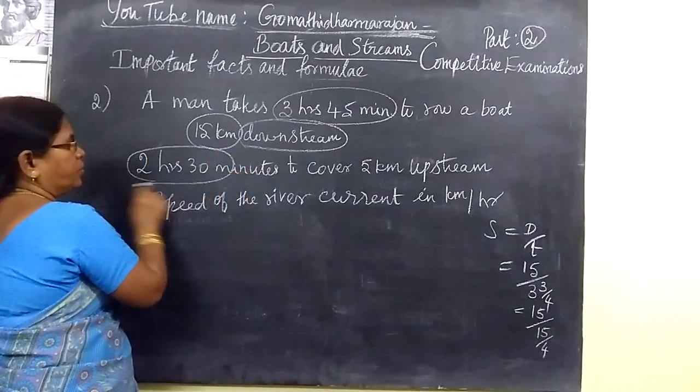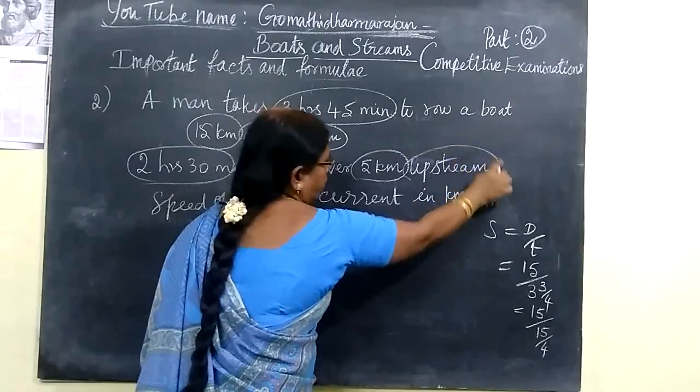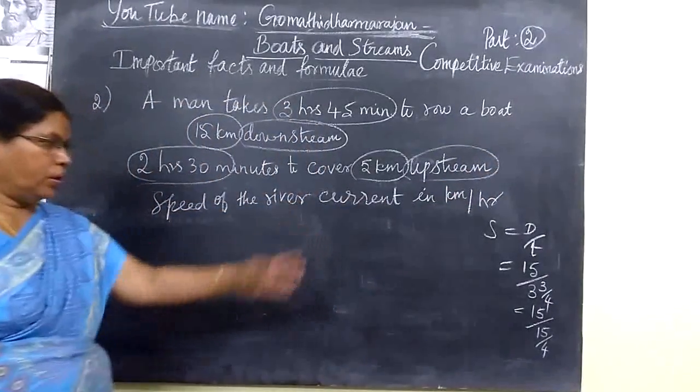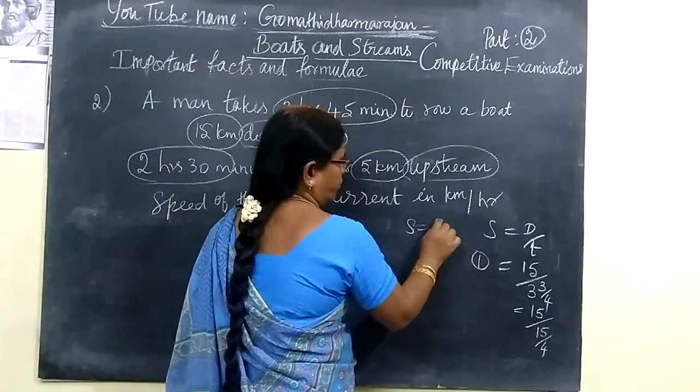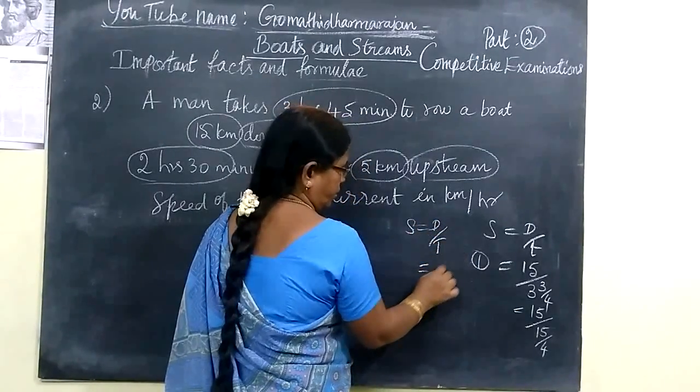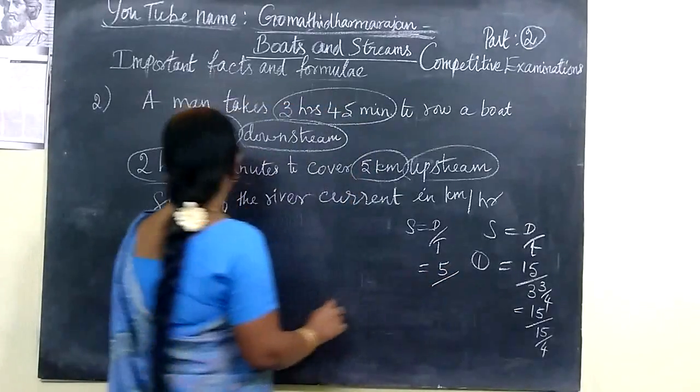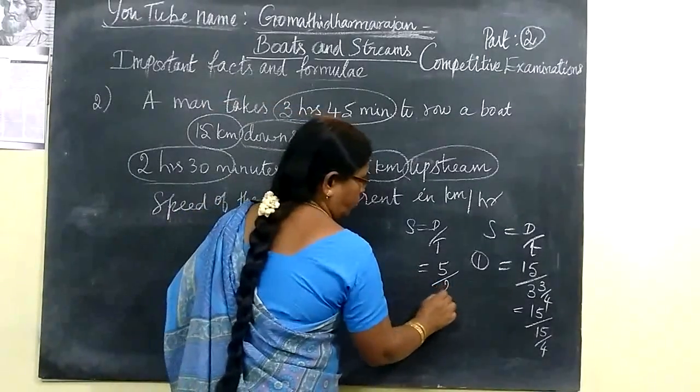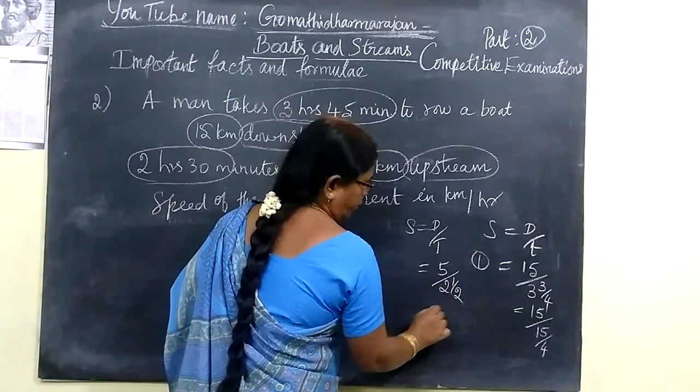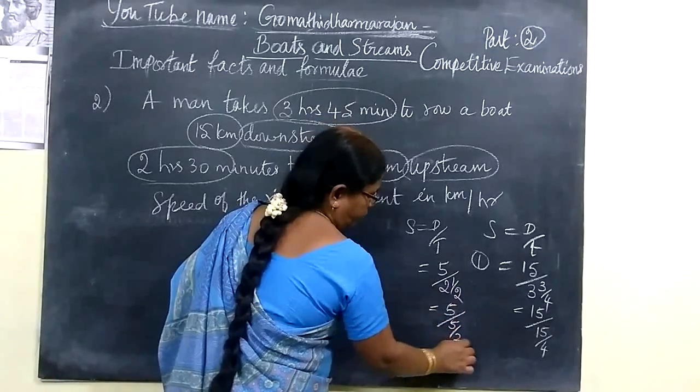Time taken 2 hours 30 minutes, then distance 5 km upstream. Same formula, speed equal to distance by time. This is equal to distance 5, and the time is 2 hours 30 minutes. 30 minutes you can write it as half, so 2 and half. Change into improper, 5 by 2.